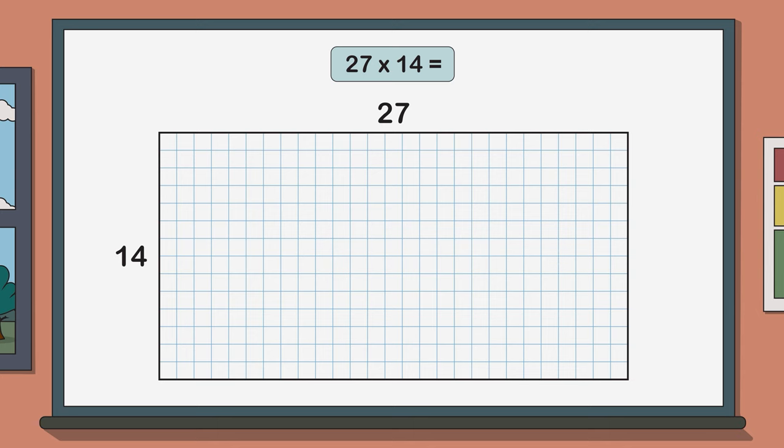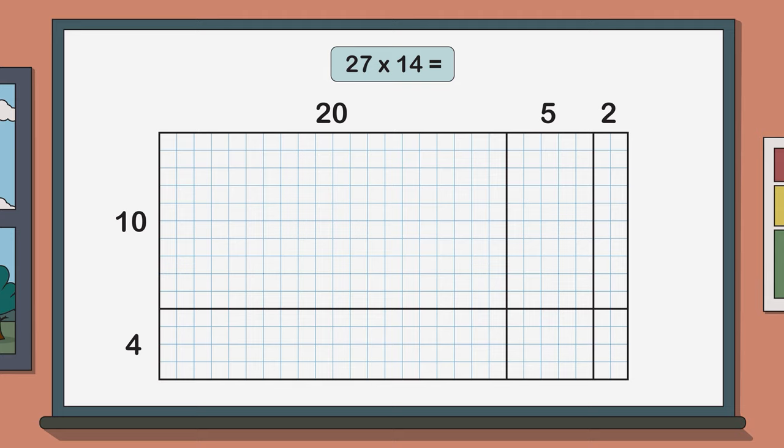In our previous example we might have split our length up into 10, 10 and 7. Or maybe even 20, 5 and 2. This will just mean you have to add together a few more numbers during the final step. But if you've done everything correctly you should still get the same answer.